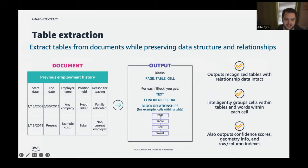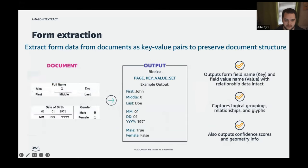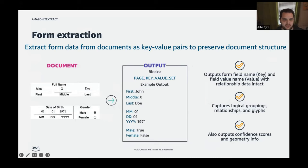Just like with plain text, table extraction gives different confidence scores, and you can trigger different workflows based on each level of output. For form extraction, Textract captures key-value pairs — for example, identifying first, middle, and last name fields — and correlates those key-value pairs together automatically.